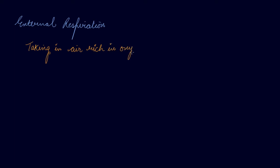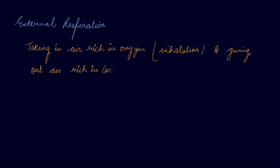External respiration means taking in air rich in oxygen when you inhale, and giving out air rich in carbon dioxide when you exhale. When you breathe in, you intake the oxygen; when you breathe out, you breathe out the carbon dioxide. This is known as external respiration.